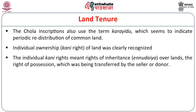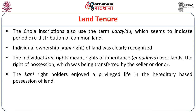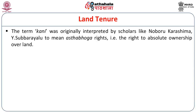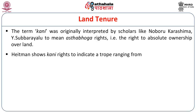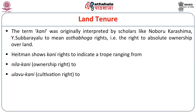Individual ownership through Kani rights of land was closely associated with rights of inheritance — the right of ownership being transferred by the seller or owner. The Kani rights holder enjoyed a privileged life in the hereditary-based possession of land. The term Kani was originally interpreted by scholars like Noburu Karashima and Vice Ubarailu as Aastaboha rights — the rights to absolute ownership of cultivable land in the agrarian system.